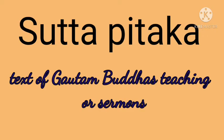The Tipitaka, meaning 'three baskets' or three sections, is written in Pali and consists of three categories of text. The first is Sutta Pitaka, which contains Gautam Buddha's teachings and sermons. The word 'pitaka' means basket — a collection.